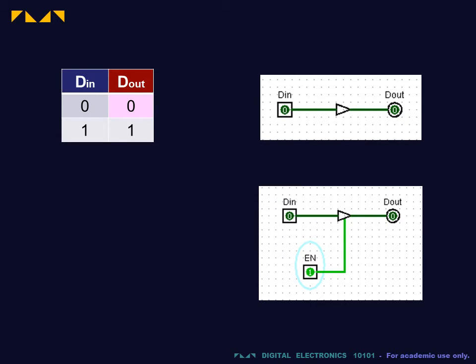By adding an enable control, we can switch the buffer on or off. When the enable input is 1, the buffer is set to be enabled and operates normally.